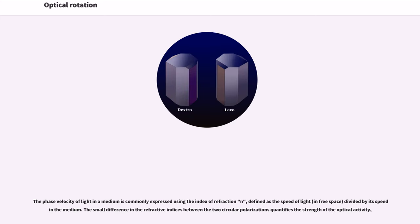The phase velocity of light in a medium is commonly expressed using the index of refraction n, defined as the speed of light divided by its speed in the medium. The small difference in the refractive indices between the two circular polarizations quantifies the strength of the optical activity.